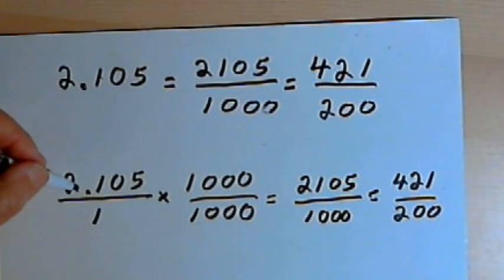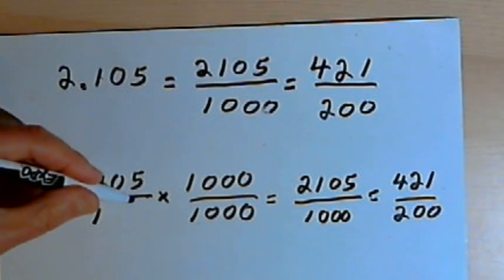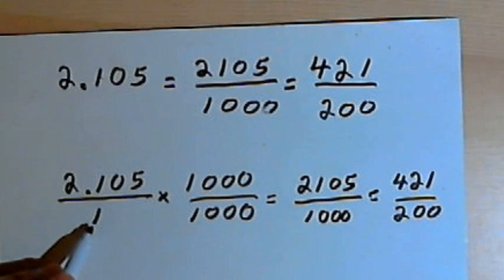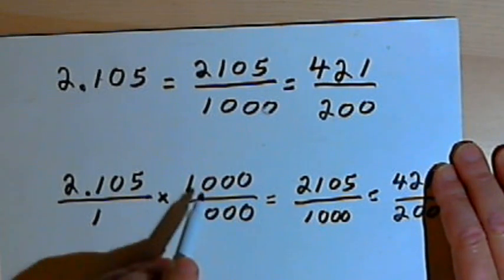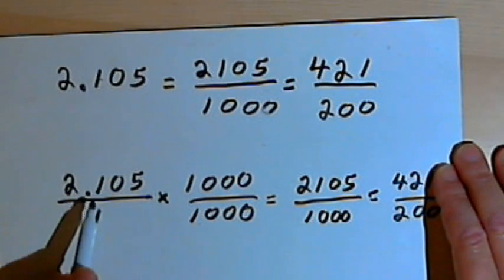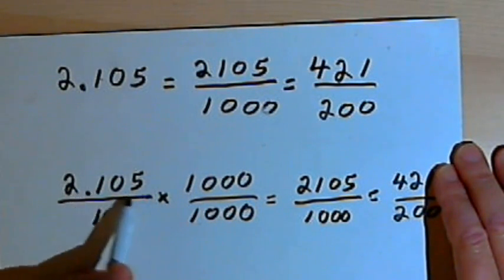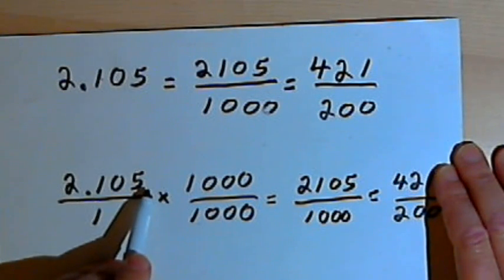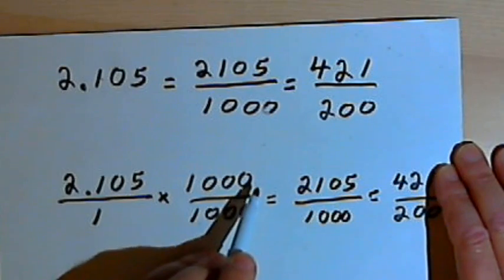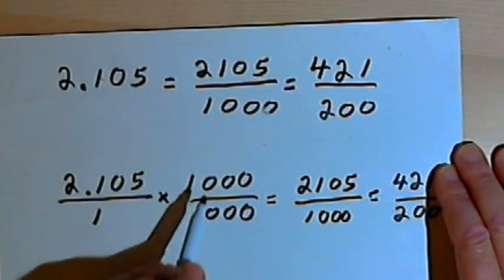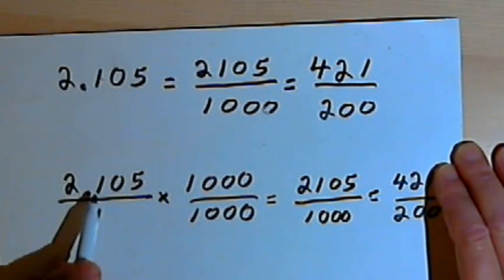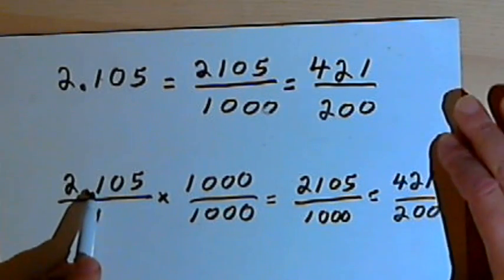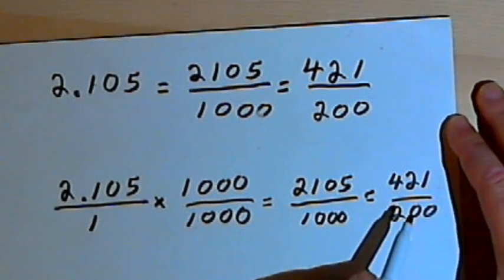The other method would be to take your decimal number, make that the numerator of a fraction with the denominator as 1, and then multiply by a 1 followed by the number of decimal places you had, the number of digits you had after the decimal point. So I have 1,000 over that number again, 1,000 over 1,000. That will get rid of your decimal point, and once again you'll end up with the same answer.